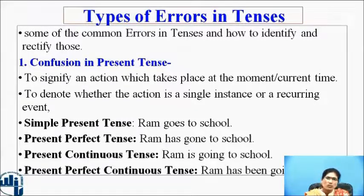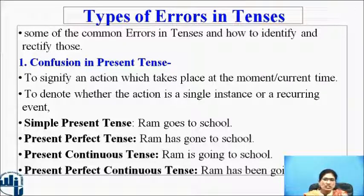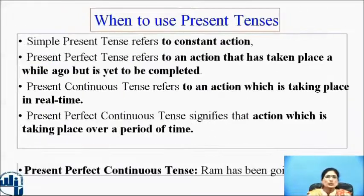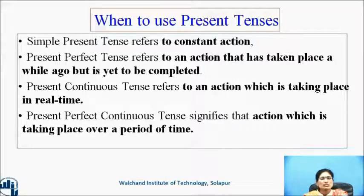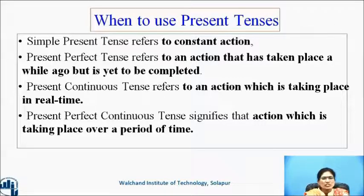Examples: simple present tense — Ram goes to school. Present perfect tense — Ram has gone to school. Present continuous tense — Ram is going to school. Present perfect continuous tense — Ram has been going to school. When to use each: simple present tense refers to constant or habitual action. Present perfect tense refers to an action that has taken place a while ago but is yet to be completed. Present continuous tense refers to an action taking place in real time. Present perfect continuous tense refers to an action taking place over a period of time.